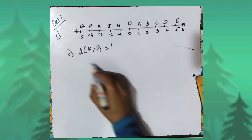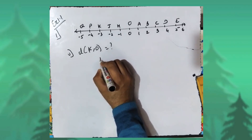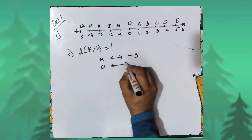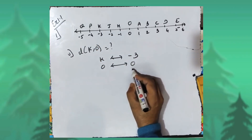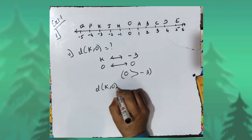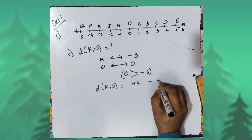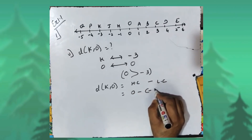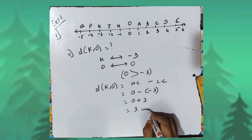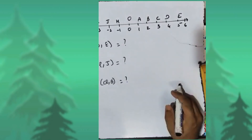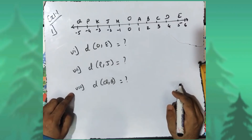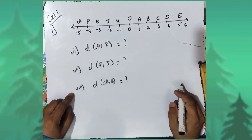Fifth sum: distance KO. The coordinate of K is minus three and the coordinate of O is zero. Zero is greater than minus three, therefore distance KO equals higher coordinate minus lower coordinate: zero minus minus three, which is zero plus three, equal to three units. Similarly, you can do sums six, seven, and eight using the same formula: distance equals higher coordinate minus lower coordinate.